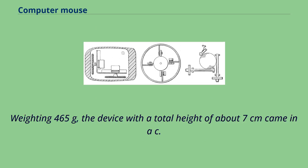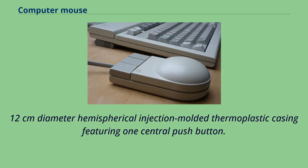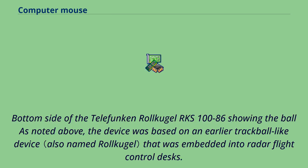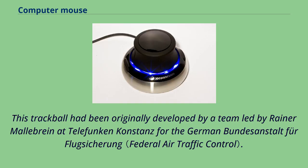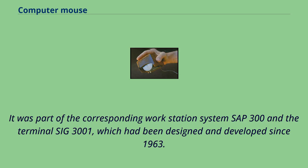Data could also be transmitted to the TR86 front-end process computer over longer-distance telex lines at 50 baud. Weighing 465 grams, the device with a total height of about 7 cm came in a 12 cm diameter hemispherical injection-molded thermoplastic casing featuring one central push button. The device was based on an earlier trackball embedded into radar flight control desks, originally developed by a team led by Reiner Malibran at Telefunken Konstanz for the German air traffic control system SAP-300 and terminal SIG-3001, designed since 1963.